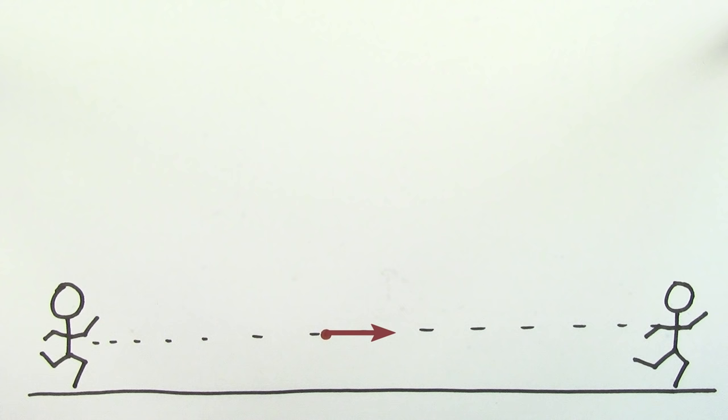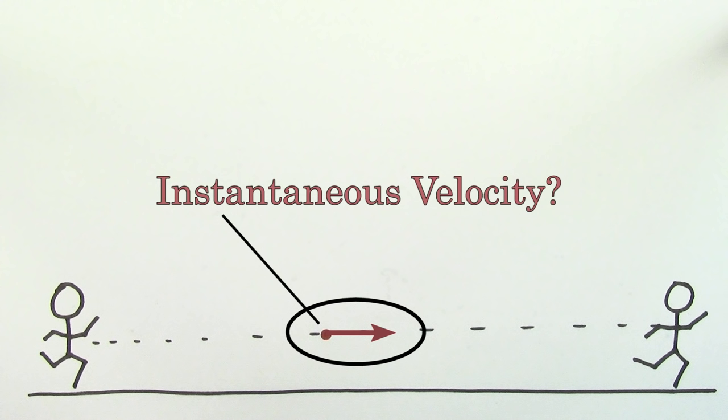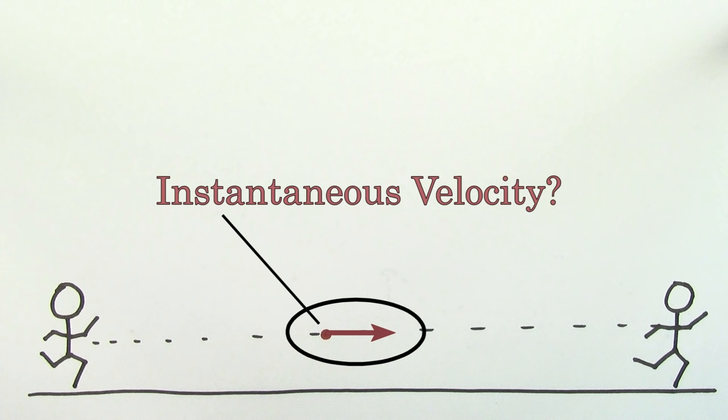In order to better zero in on the instantaneous velocity, we could choose an even smaller displacement over that even shorter time interval. But we're going to run into a problem here, because if you want to find a perfect value for the instantaneous velocity, you'd have to take an infinitesimally small displacement divided by an infinitesimally small time interval. But that's basically zero divided by zero, and for a long time no one could make any sense of this.